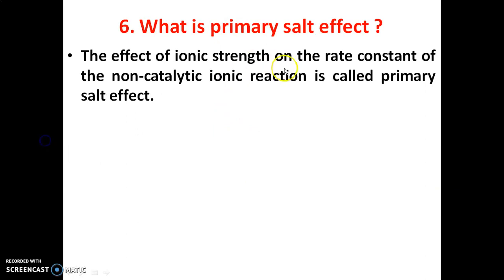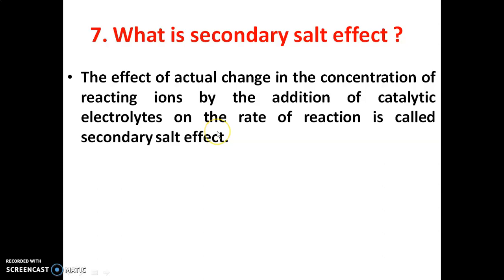Next: what is the primary salt effect? The effect of ionic strength on the rate constant of a non-catalytic ionic reaction is called the primary salt effect. When there is a catalytic reaction, it is called the secondary salt effect — meaning the effect of actual change in the concentration of reacting ions by the addition of catalytic electrolytes on the rate of reaction.